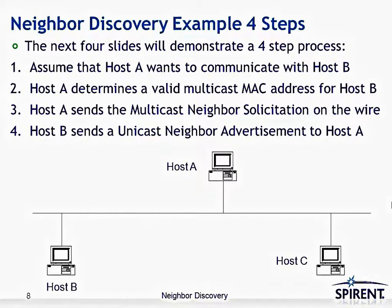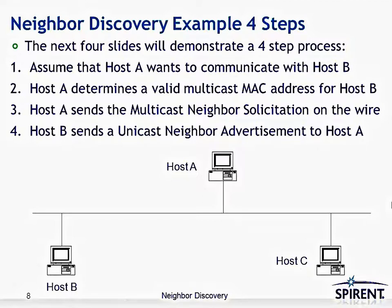Let's look at a Neighbor Discovery example and the four-step process. Assume: step one, host A wants to communicate with host B. Step two, host A needs to determine a valid multicast MAC address for host B — a MAC address that host B is listening to, rather than sending to broadcast as was the case with ARP in IPv4. Step three, host A sends a multicast Neighbor Solicitation on the wire, where only host B or a very limited number of hosts will be listening to that address. Step four, host B sends a unicast Neighbor Advertisement back to host A.